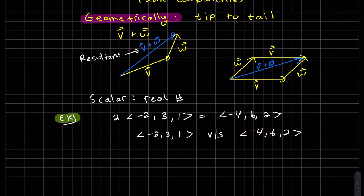So they go in the same direction. But one of them is twice as long. This is twice as long because we saw we multiplied it by two. Same direction though.